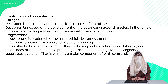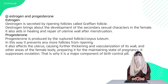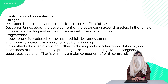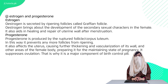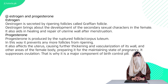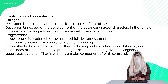The tenth difference: estrogen versus progesterone. Estrogen is the hormone released by Graafian follicles; it triggers egg release and develops secondary sexual characters. Progesterone is secreted after the egg is released from the Graafian follicles, when the structure becomes corpus luteum, and it prevents other follicles from ripening.